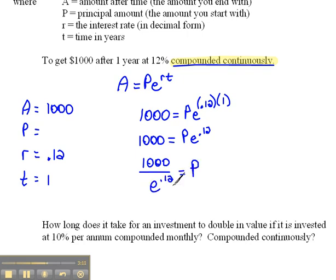Now of course if you say this to somebody, you say, well if you need $1,000, you're going to have to invest 1,000 divided by E to the 0.12 power, they're going to look at you like you're crazy. So at this point we need to go ahead and put it in our calculator and figure out what that number actually is.